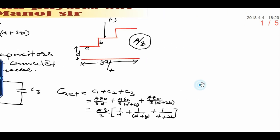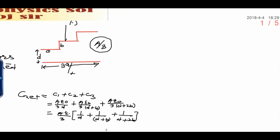Now you can easily simplify it through mathematical simplification, and finally you will get the answer. Net capacitance between the plates is a epsilon 0 into 3d squared plus 6bd plus 2b squared, and in denominator it will be 3d into d plus b into d plus 2b. And this is the final answer of this problem.